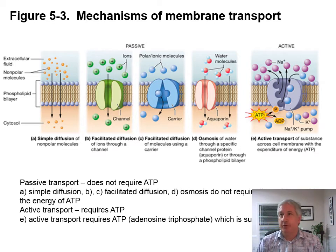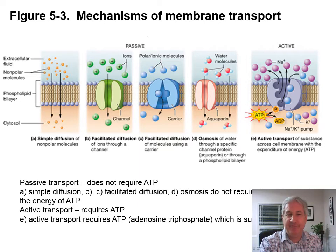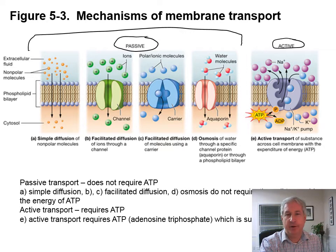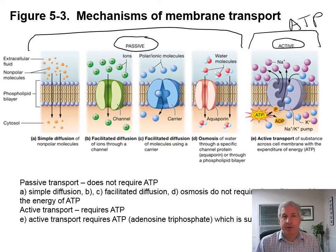Osmosis is basically diffusion, but just diffusion of water. There are two categories of membrane transport: passive and active. Passive membrane transport does not require energy — no ATP. It requires a concentration gradient: higher concentration on one side, lower on the other. Passive transport includes simple diffusion and facilitated diffusion.